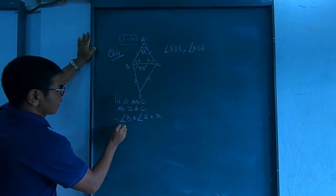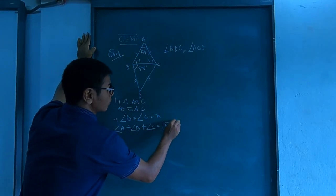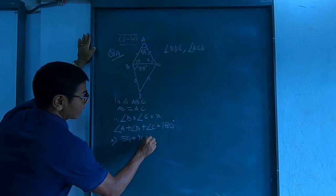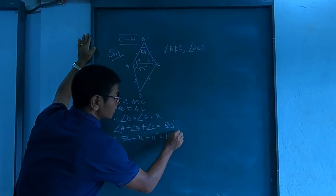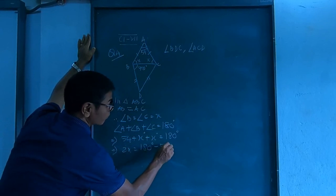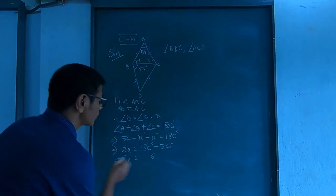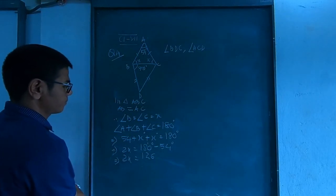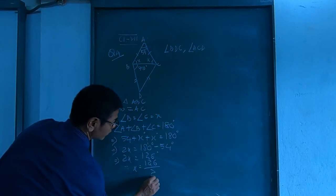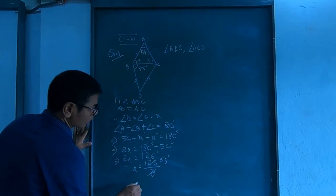Now let us solve. Angle A plus angle B plus angle C equals 180. A is 54, B is X, and C is X, which gives 180 degrees. Thereby, 2X equals 180 minus 54, which is 2X equals 126 degrees. Therefore, X equals 126 divided by 2, which is 63 degrees. So X equals 63 degrees.